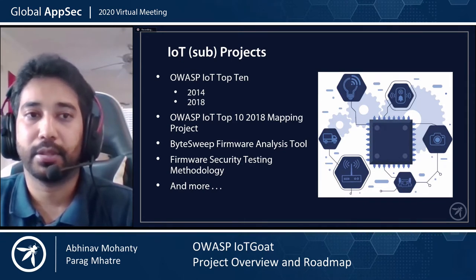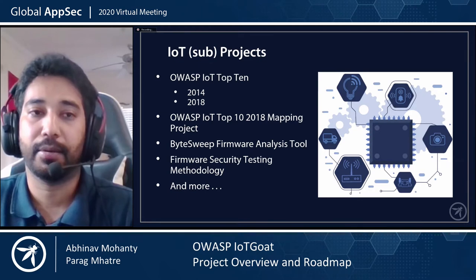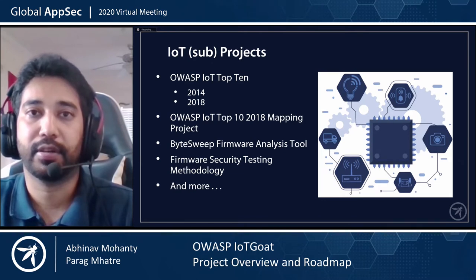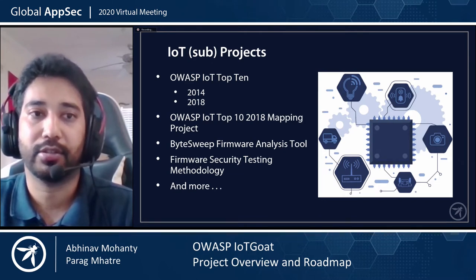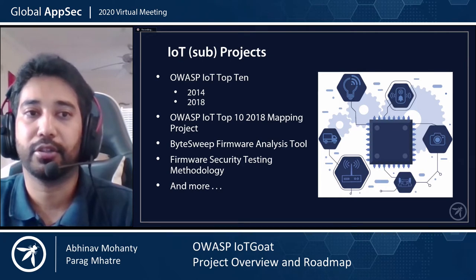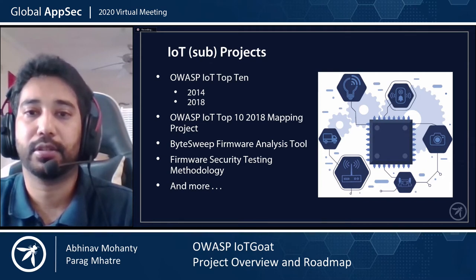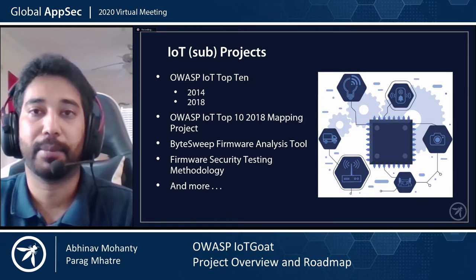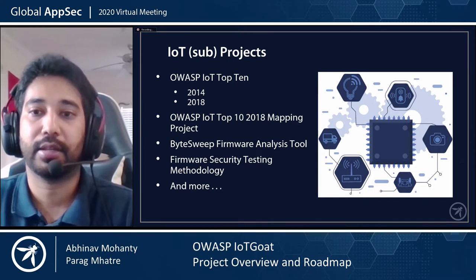Some of the most prominent ones include the OWASP IoT Top 10, which discusses the most prevalent IoT vulnerabilities. The initial list was released in 2014 and has gone through several changes, with the latest update released in 2018. Another important project is the OWASP IoT Top 10 2018 mapping project, whose intention is to map the OWASP IoT Top 10 vulnerabilities to industry publications and sister projects, helping provide resources for practical usage.